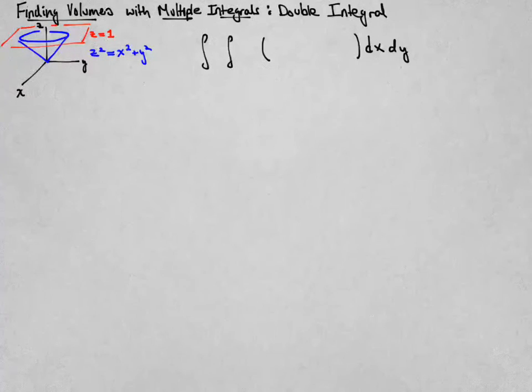In this video, we'll find the volume of this cone that's depicted here in blue as a double integral. The cone surface is given by the equation z squared is equal to x squared plus y squared.